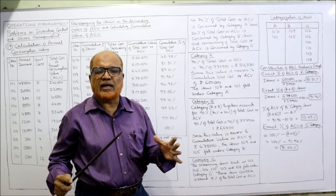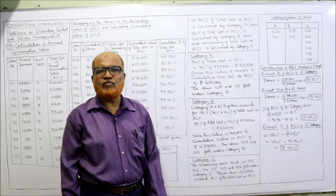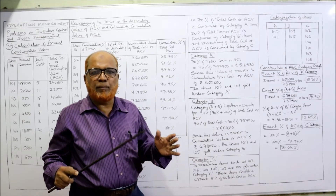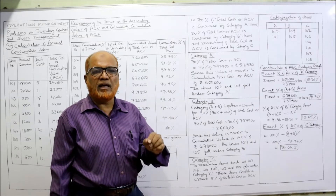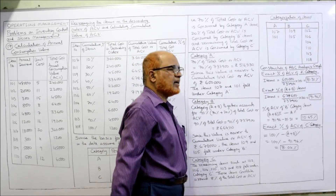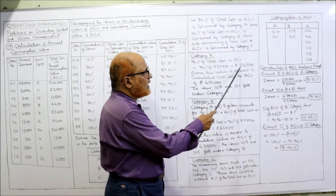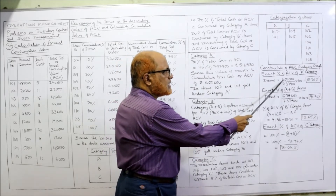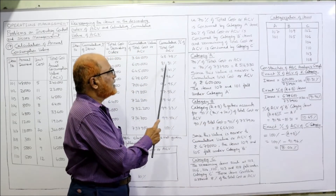Now we proceed to the construction of the ABC analysis graph. After classifying the items, it is better to present the data in graphical format. For exact percentages: A category — 6,00,000 ÷ 7,37,900 × 100 = 81.31%. This is the cumulative percentage for the first two items.